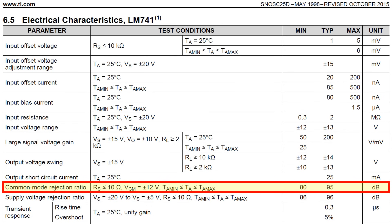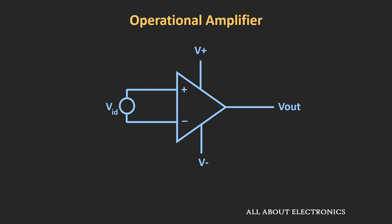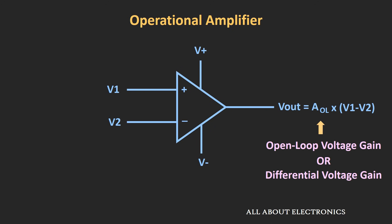Usually this parameter is defined for the differential amplifier. In the earlier introductory videos of op-amp, we have seen that op-amp is also a differential amplifier and it amplifies the differential input signal which is available between the two terminals. If the voltages V1 and V2 are applied to this op-amp, then the output in open-loop configuration will be open-loop gain multiplied by the difference between the two input voltages. This gain is known as the open-loop gain or simply differential gain, because it amplifies the difference between the two input voltages.